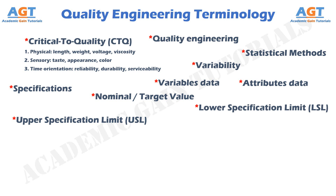Some quality characteristics have specification limits on only one side of the target. For example, the compressive strength of a component used in an automobile bumper likely has a target value and a lower specification limit, but not an upper specification limit. Specifications are usually the result of the engineering design process for the product. Traditionally, design engineers have arrived at a product design configuration through the use of engineering science principles, which often results in the designer specifying the target values for the critical design parameters.